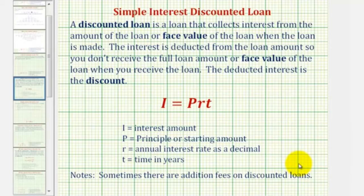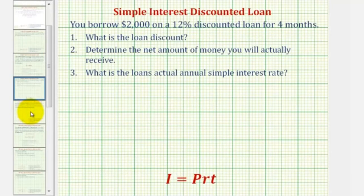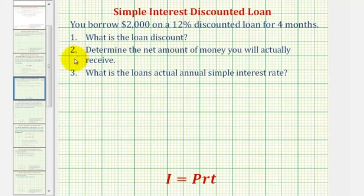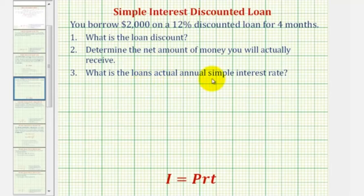Let's take a look at an example. Let's say you borrow two thousand dollars on a twelve percent discounted loan for four months. Number one, we want to determine what is the loan discount. Number two, we want to determine the net amount of money you'll actually receive from the loan. And number three, what is the loan's actual annual simple interest rate.